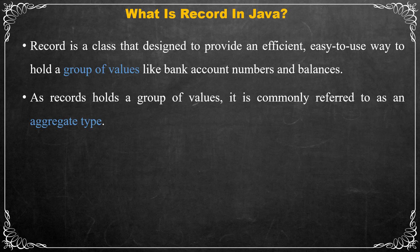One of the benefits of records is the reduction of effort required to create a class whose primary purpose is to organize two or more values into a single unit. Although it is possible to do that with a class, doing so requires writing a number of lines of code for constructors, getter and setter methods, and overriding one or more of the methods inherited from Object. By creating a data aggregate using a record, these elements are handled automatically for you.